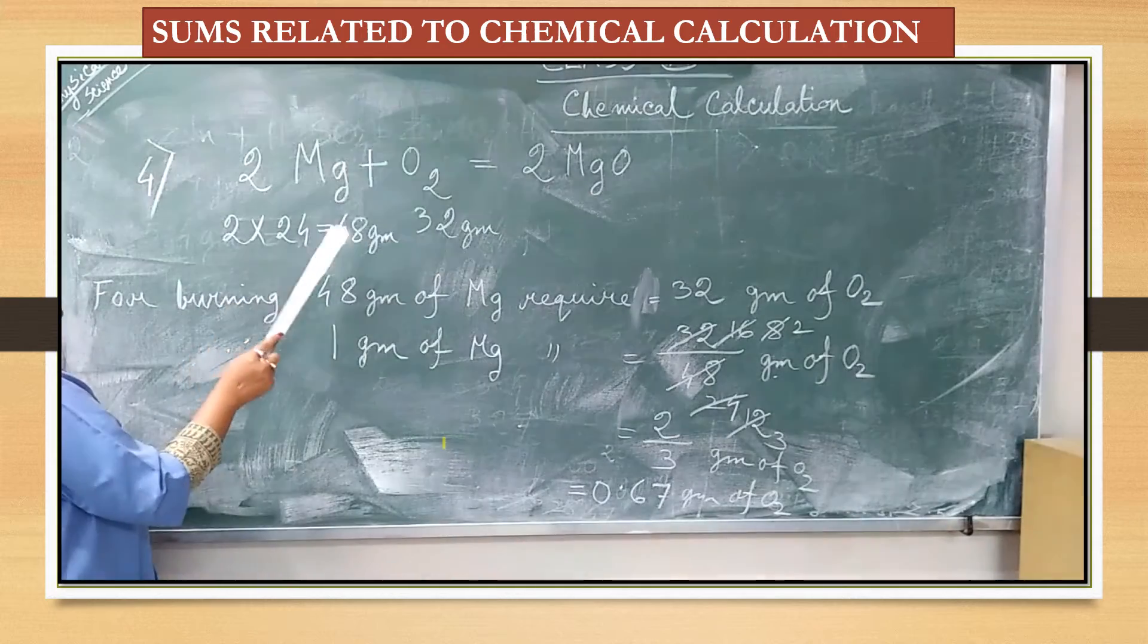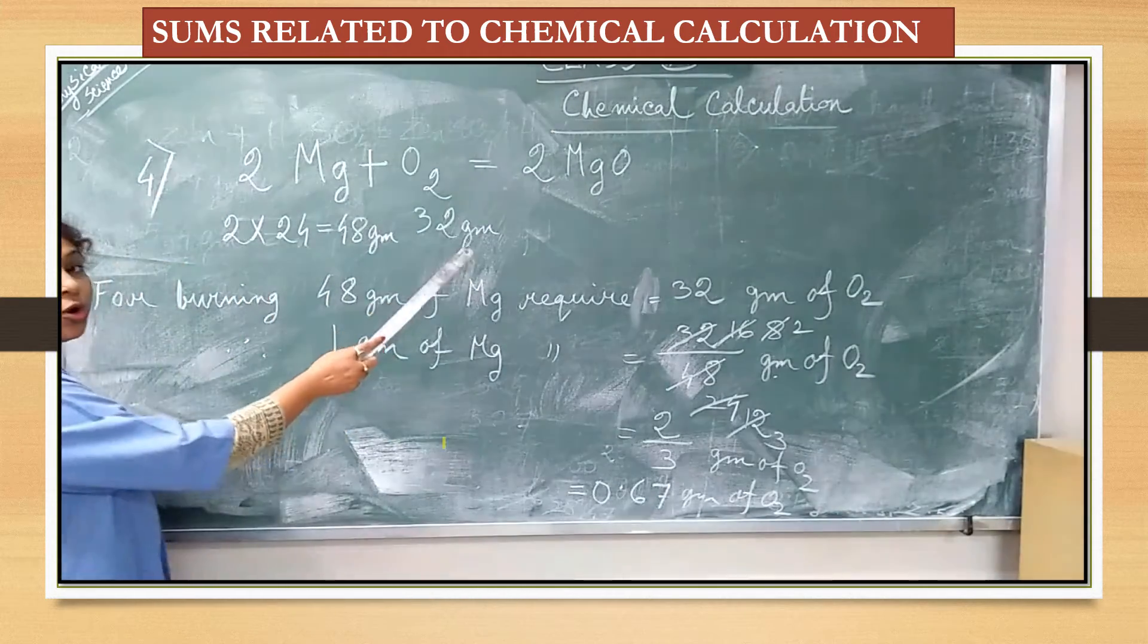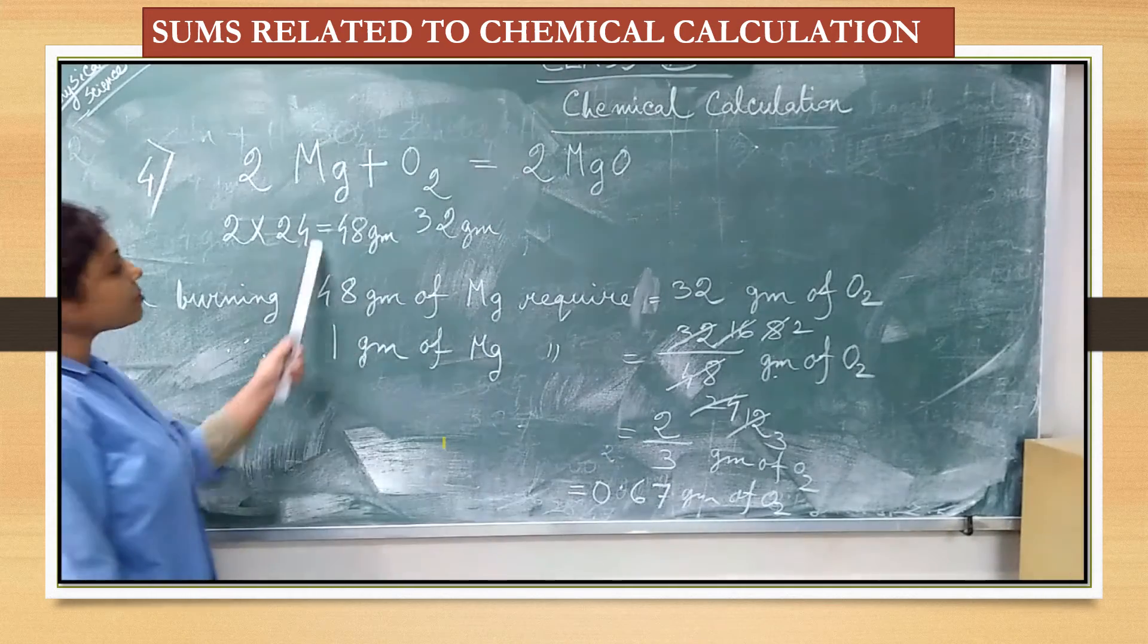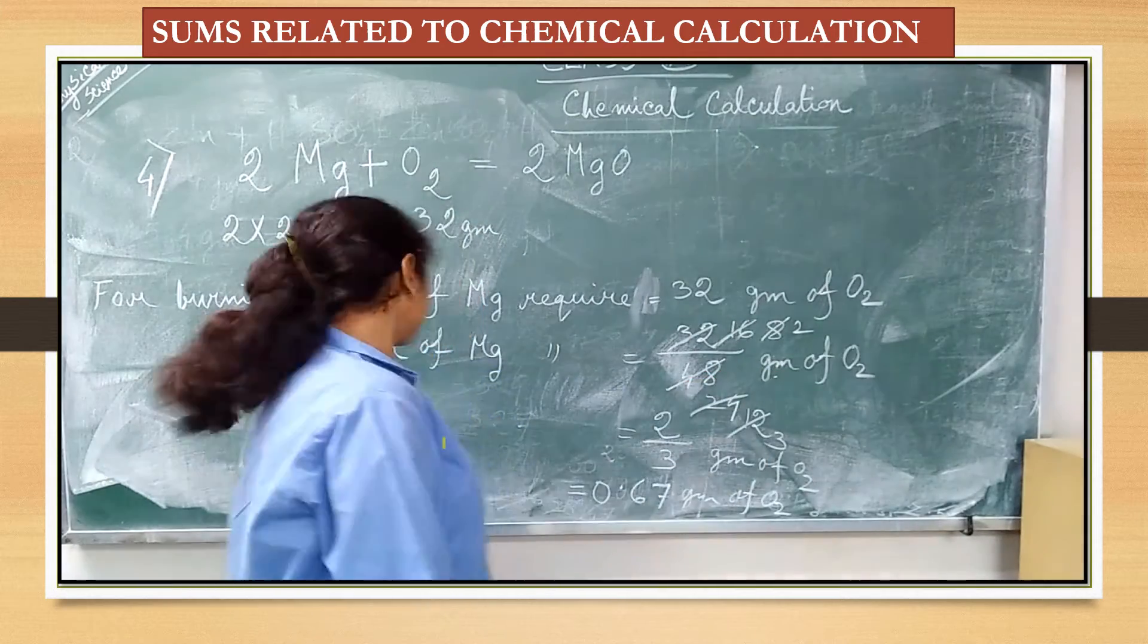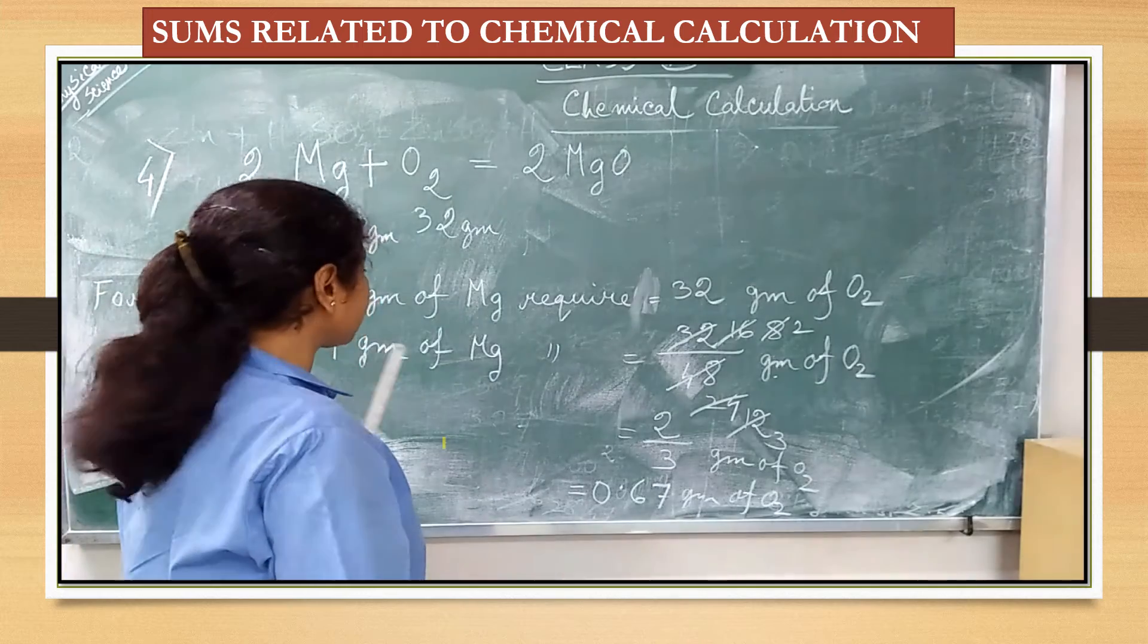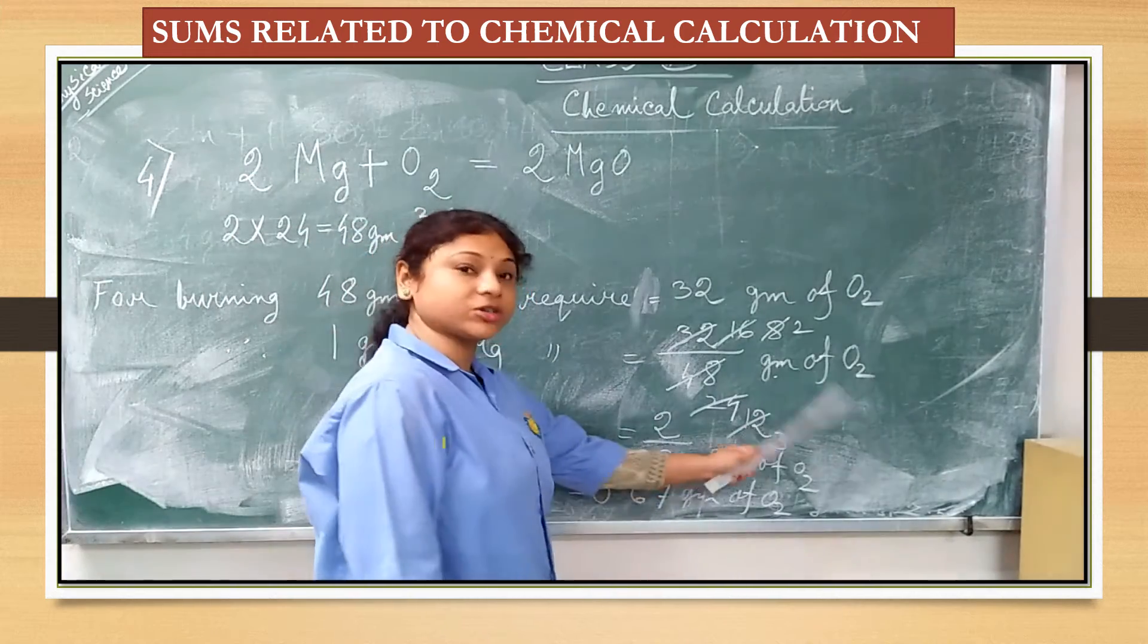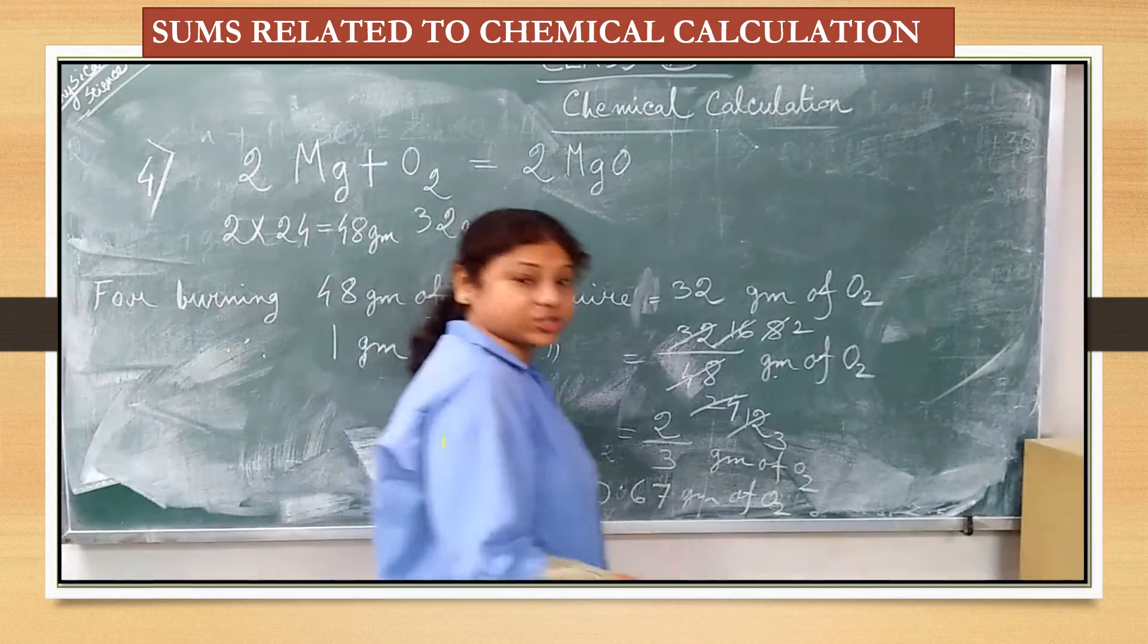2 into 24, magnesium means 48 gram and that is oxygen 32 gram. That means 16 into 2, 32 gram. Now, for burning 48 grams of magnesium require 32 gram of oxygen. So, therefore, for burning 1 gram according to your question, 1 gram of magnesium require 32 by 48 gram of oxygen. That is coming 0.67 gram of oxygen.